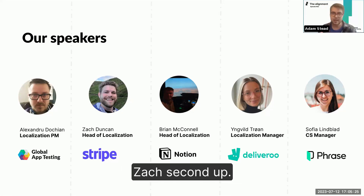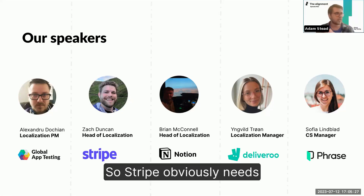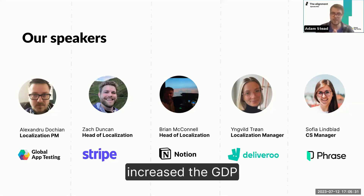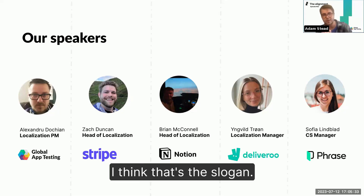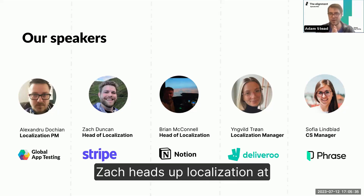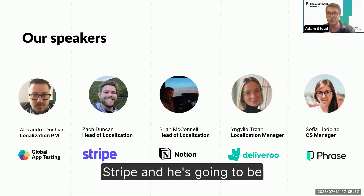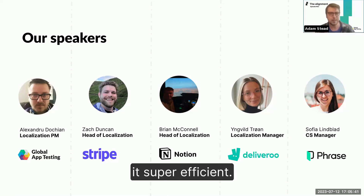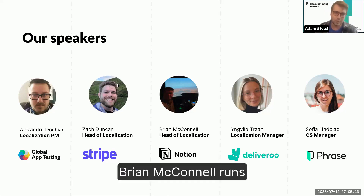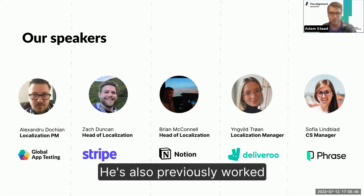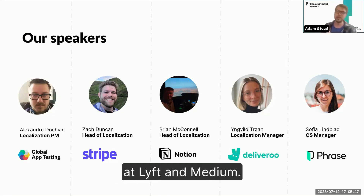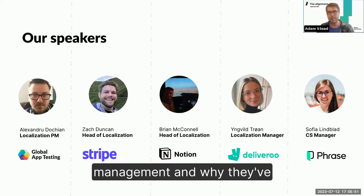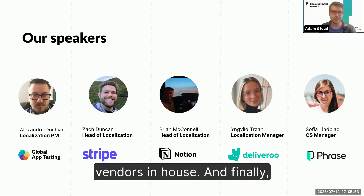We're going to have Zach second up. Stripe obviously needs no introduction — the payments company that has increased the GDP of the internet. Zach heads up localization at Stripe and he's going to be talking about that function and how he's made it super efficient. Brian McConnell runs localization at Notion — he's also previously worked at Lyft and Medium. Brian's going to talk about vendor management and why they've made the decision to bring some vendors in-house.